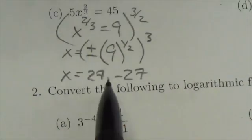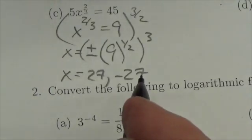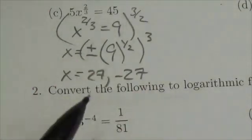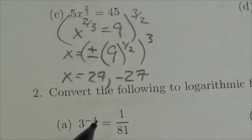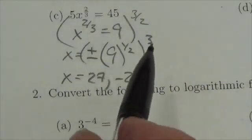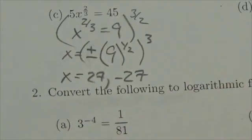Now, had we done this in the reverse order, we would have cubed the 9 first and then taken the positive or negative square root of that result. Okay, but this is a little bit easier to simplify first and then make it a larger value.